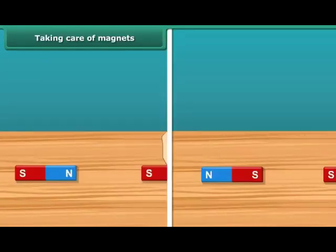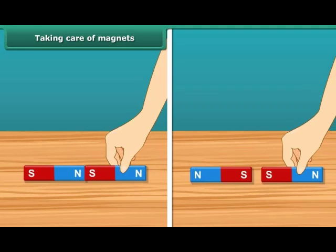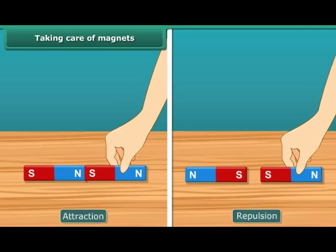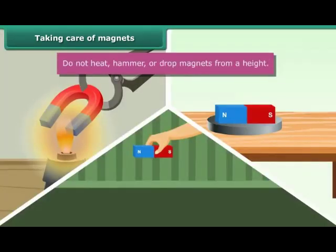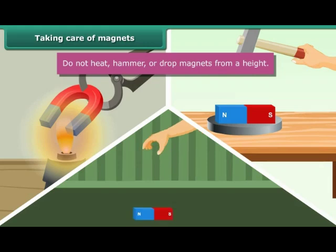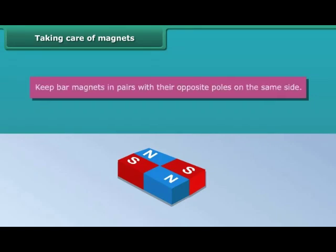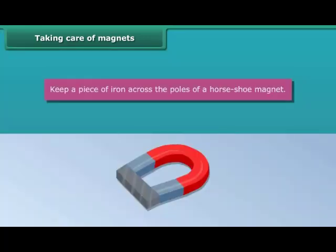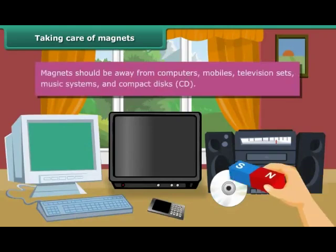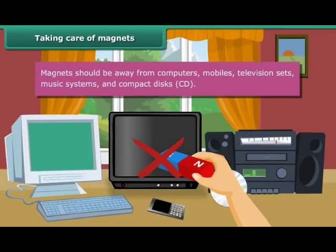We are now aware of the attraction and repulsion properties of a magnet. To keep magnets safe and in working condition, follow these guidelines: Do not heat, hammer, or drop magnets from a height — they will lose their property if done so. Keep bar magnets in pairs with their opposite poles on the same side, and use wood to separate them. Keep a piece of iron across the poles of a horseshoe magnet. Magnets should be kept away from computers, mobiles, television sets, music systems, and compact discs.